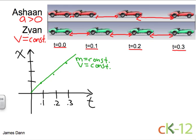Now, for Ashaan, in the first tenth of a second, he's barely moved. And then after point two seconds, he's still behind Zion. At point three, he's caught up.